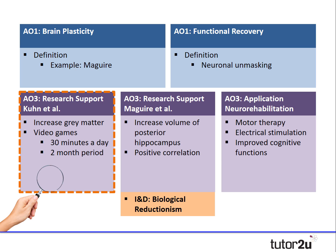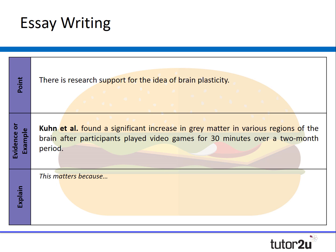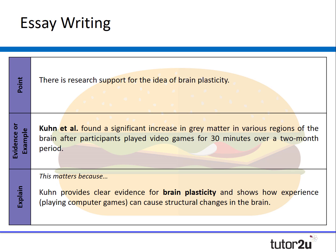Let's start by looking at a straightforward evaluation paragraph for Kuhn. We might say: there is research support for the idea of brain plasticity. Kuhn et al. found a significant increase in grey matter in various regions of the brain after participants played a video game for 30 minutes over a two-month period, in comparison to a control group. This matters because it provides clear evidence for brain plasticity and shows how experience can cause structural changes in the brain. Notice it's a very short paragraph, but it is simple and still effective.